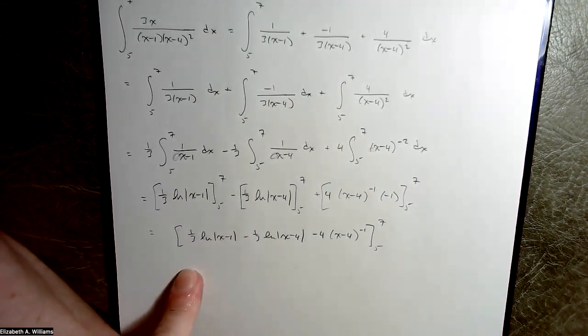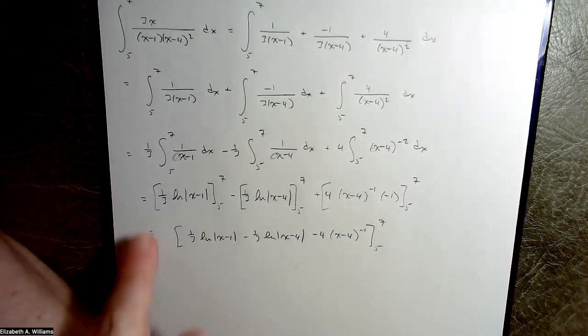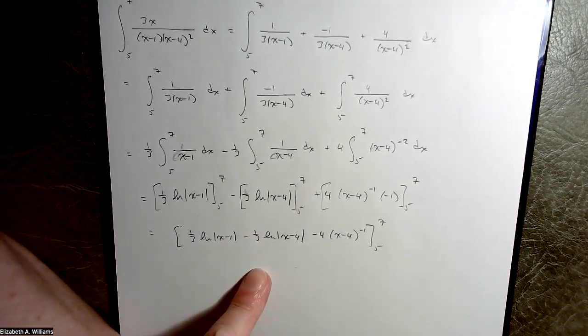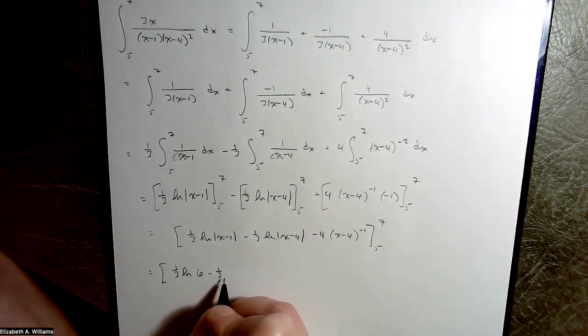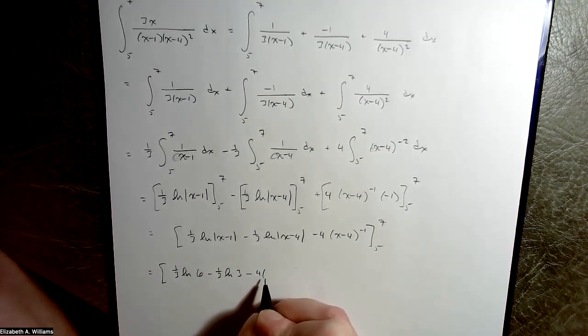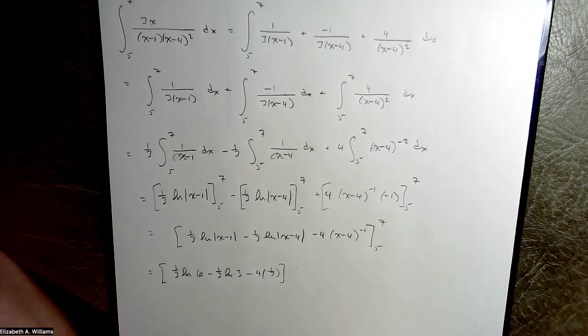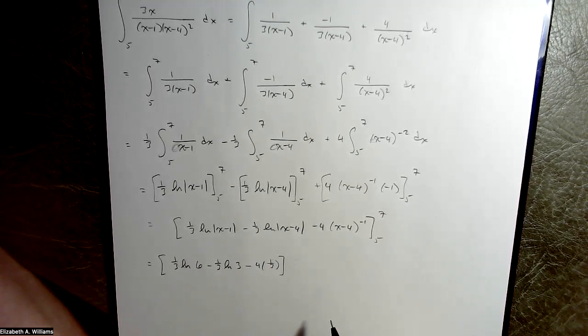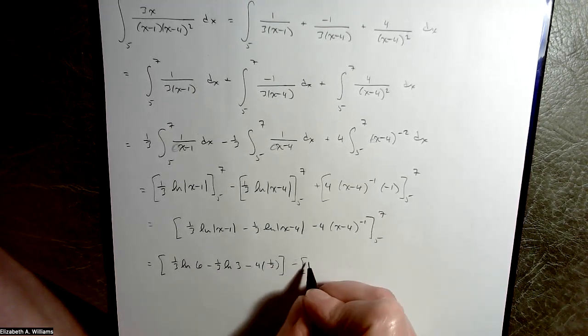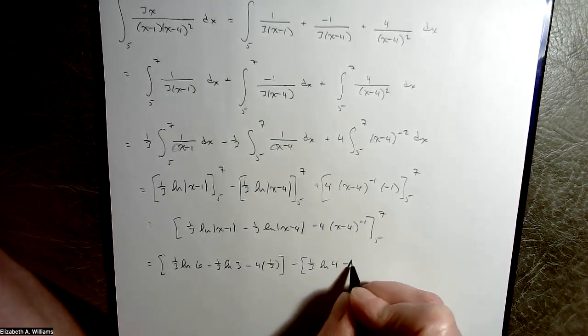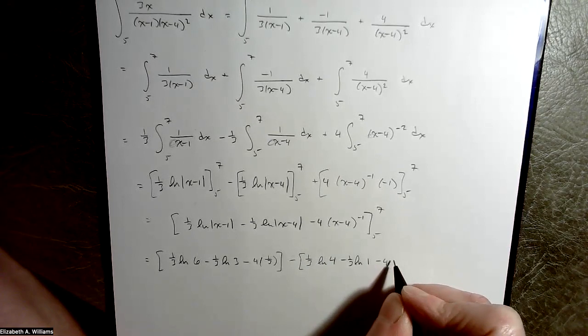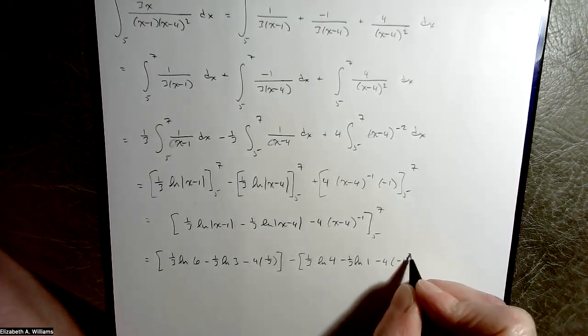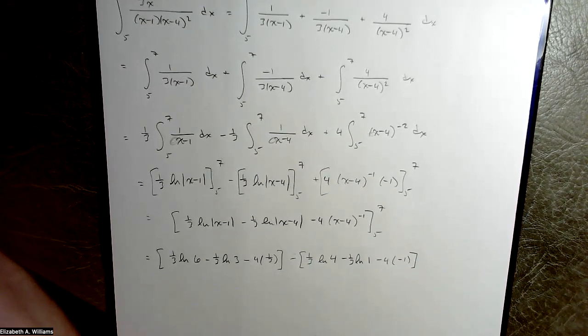So if you put a 7 through that business, you'd have 1/3 natural log of 6 minus 1/3 natural log of 3 minus 4 times 1/3. Then I subtract and slap a 5 through that thing. So 1/3 natural log of 4 minus 1/3 natural log of 1, which is nice. The natural log of 1 is 0. Then minus 4 times minus 1, 1 over minus 1, which is minus 1.